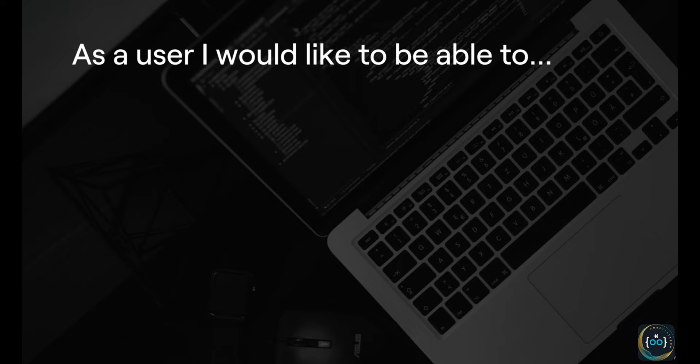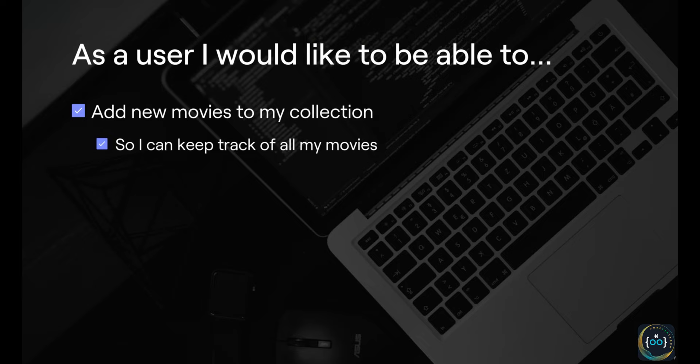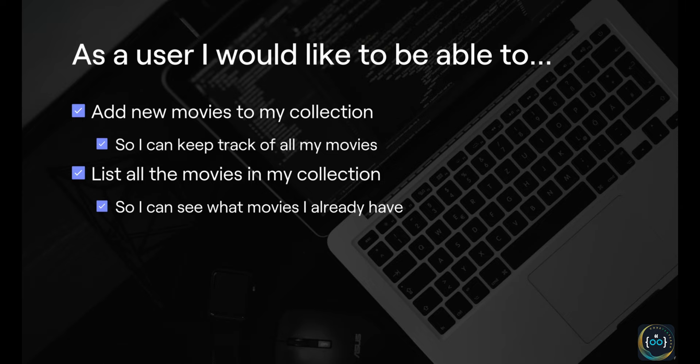The requirements for the project are normally defined as user stories — a phrase in the format: 'as a user, I would like to be able to do something so that I can achieve something.' The first user story is that as a user, I'd like to be able to add new movies to my collection so that I can keep track of them. The second is that as a user, I'd like to list all the movies in my collection so that I can see what movies I already have.